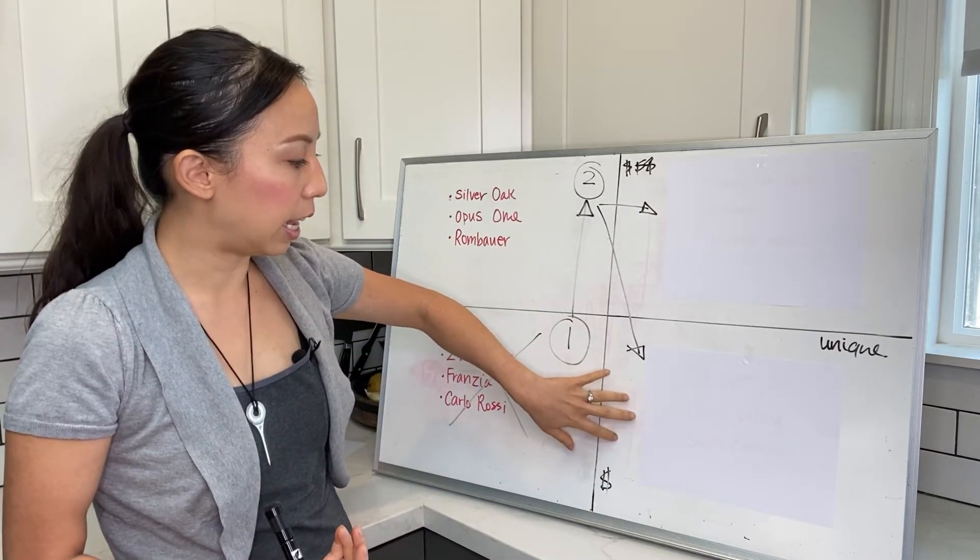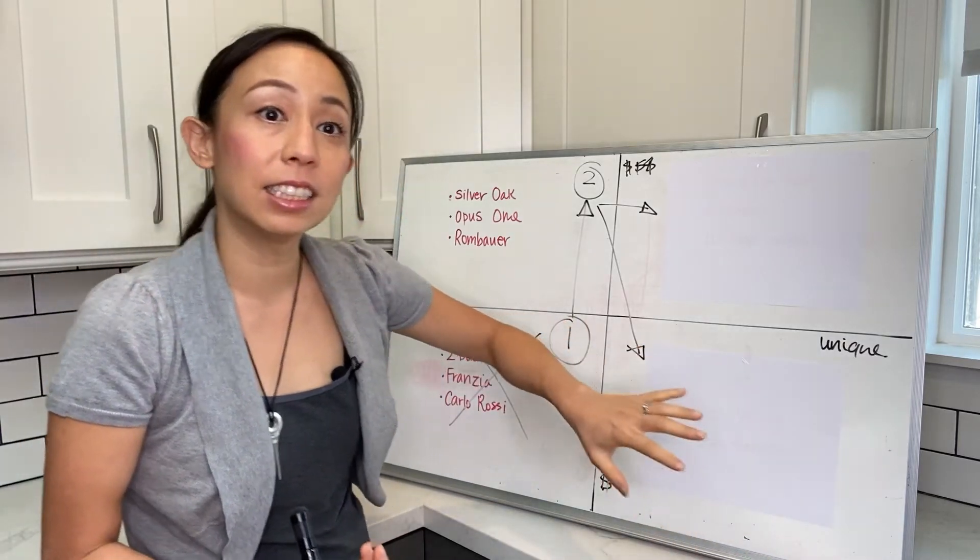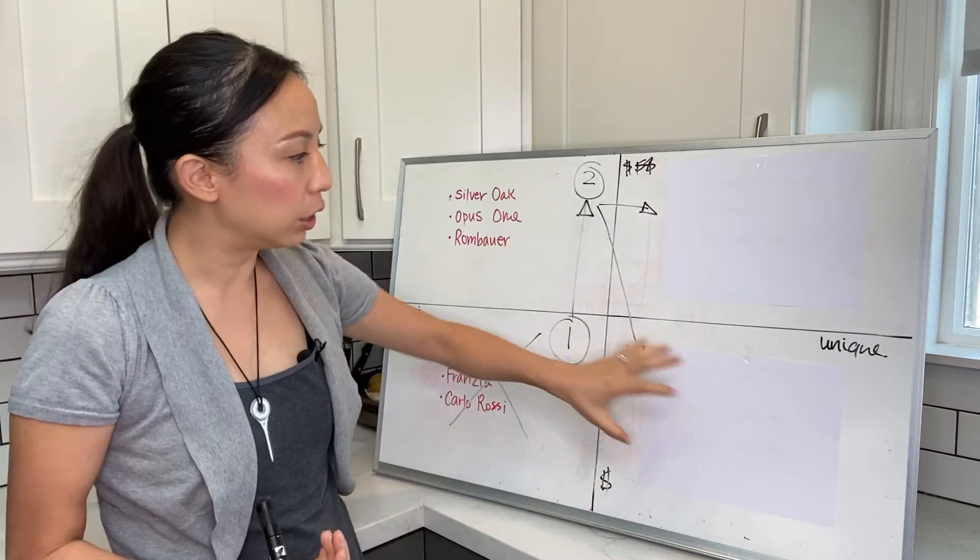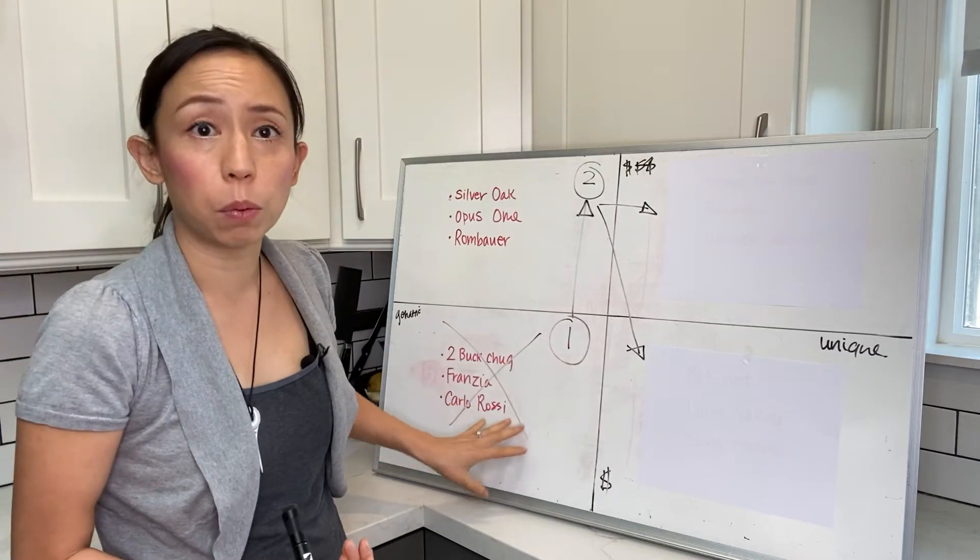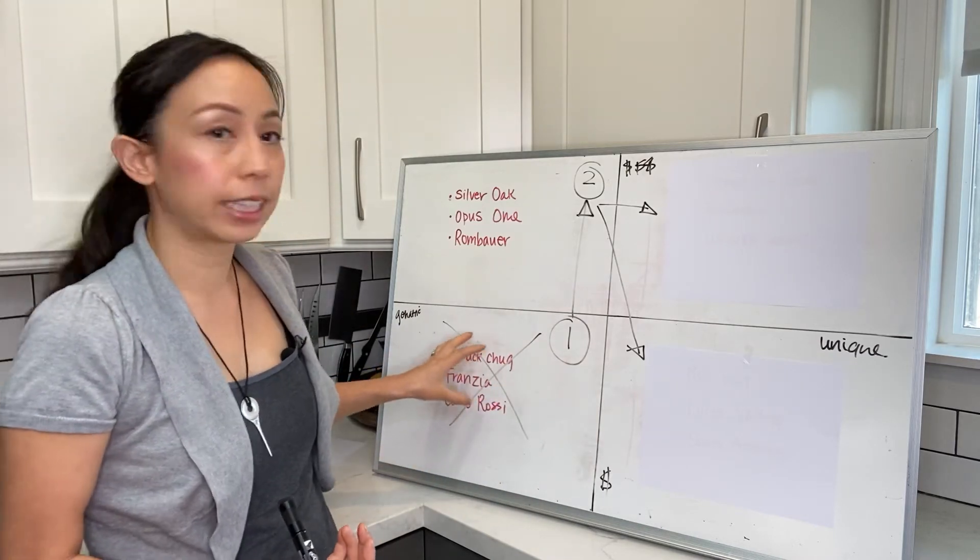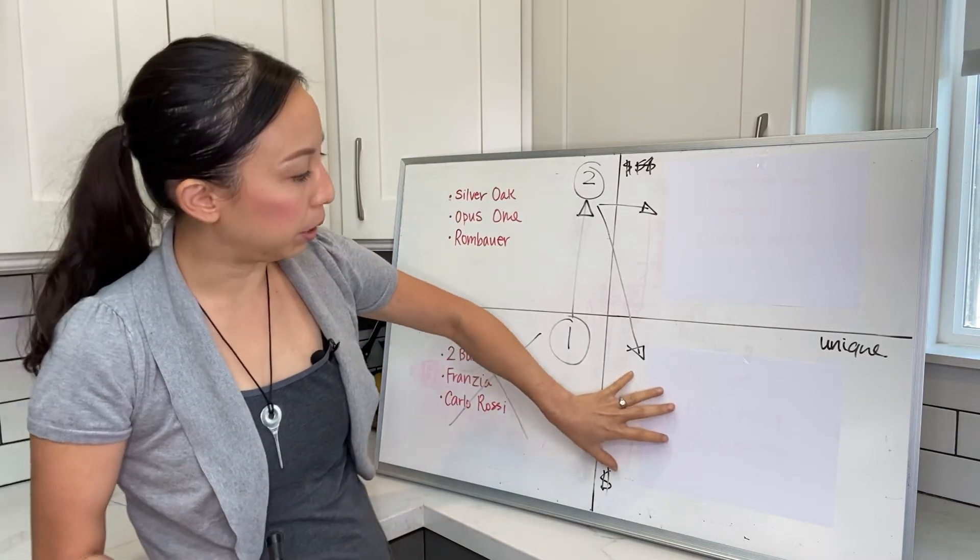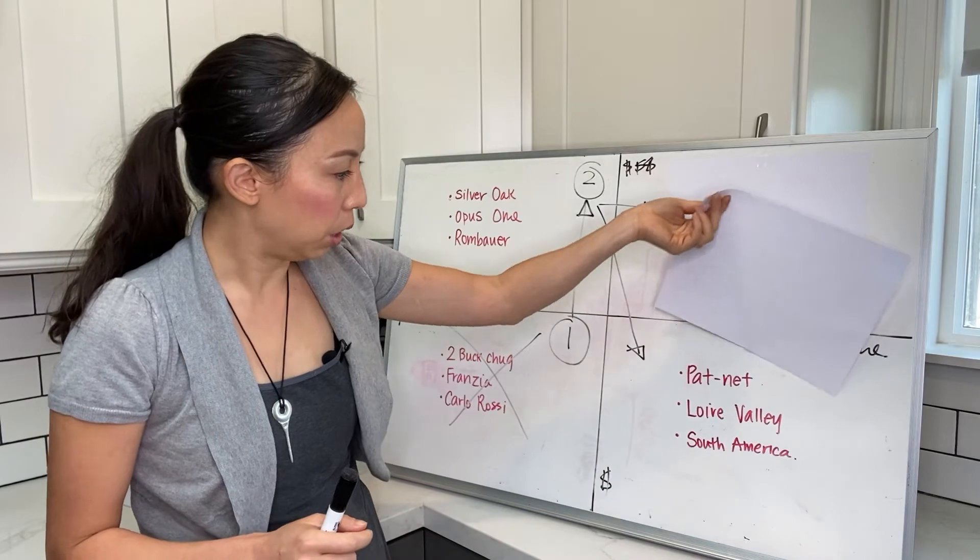This is not necessarily expensive but very unique. This is a part that I see a lot of sommeliers like to go into. This group probably has the smallest population—most of our wine consumers are in the generic expensive category. You're lucky if you move here or to the top right.